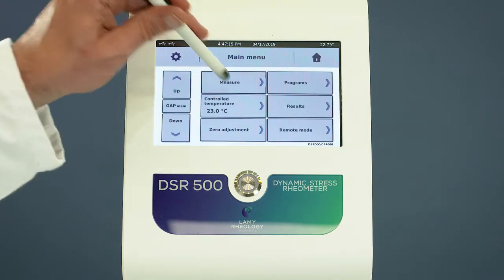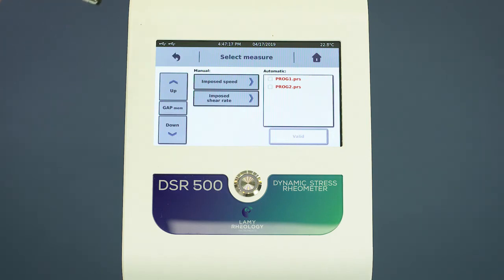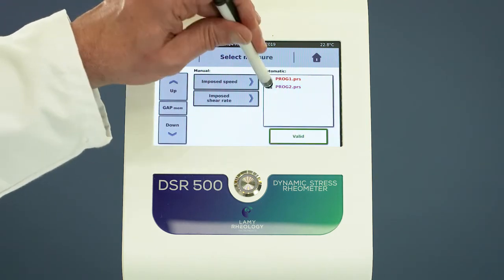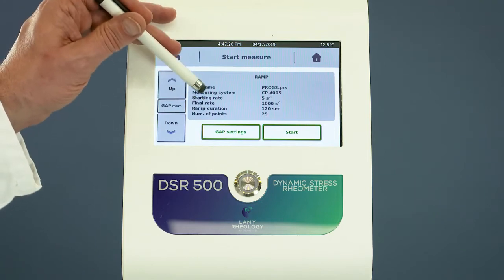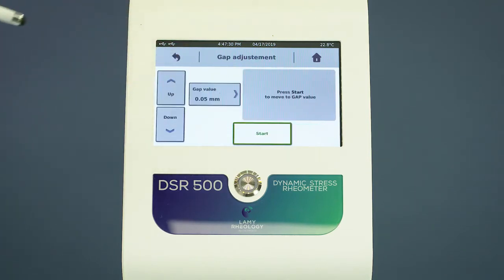Go to measure and select your method. The device shows you details of the program. Select gap settings.